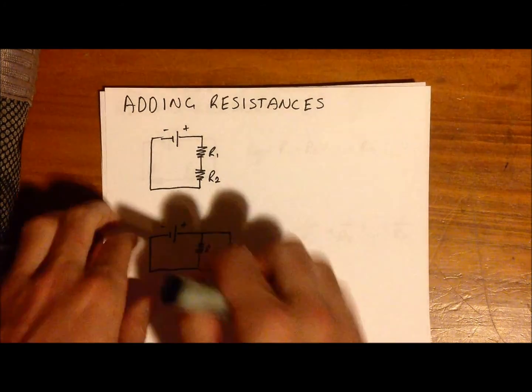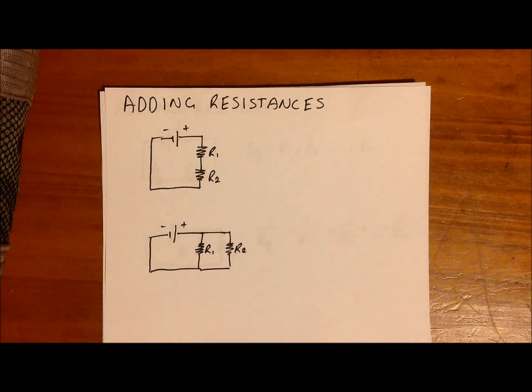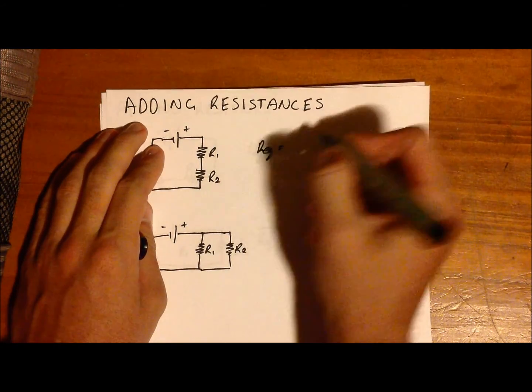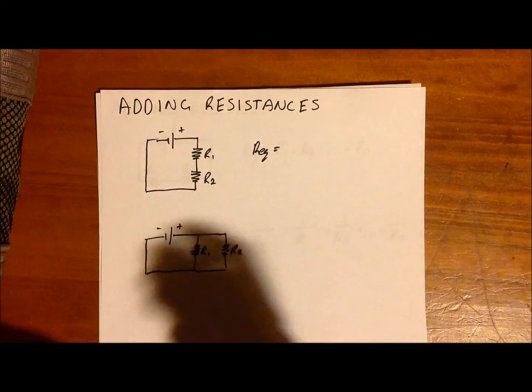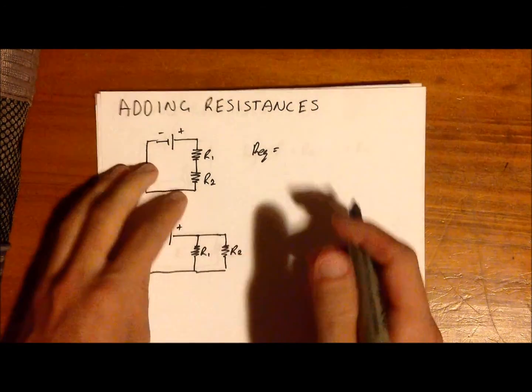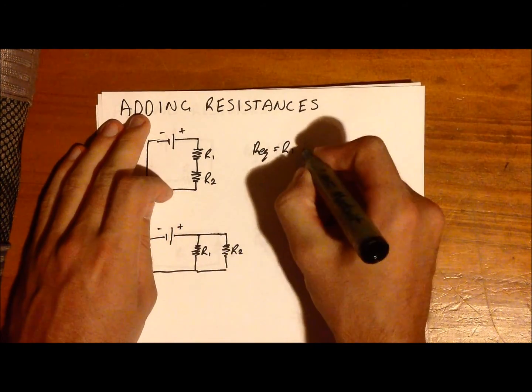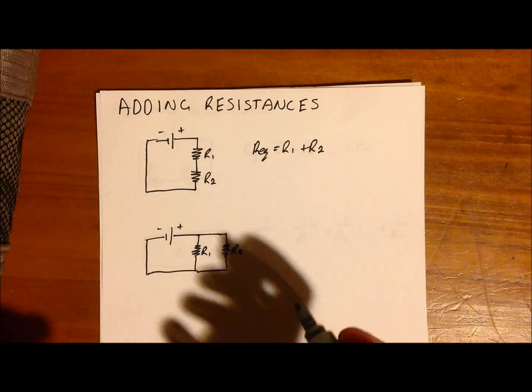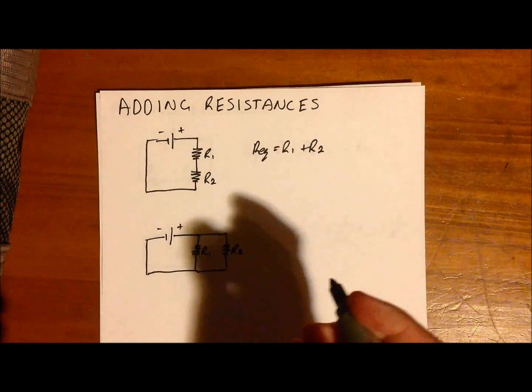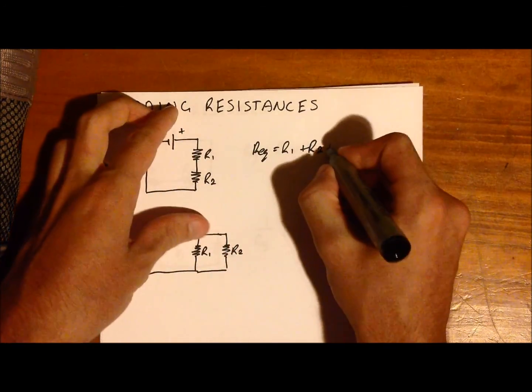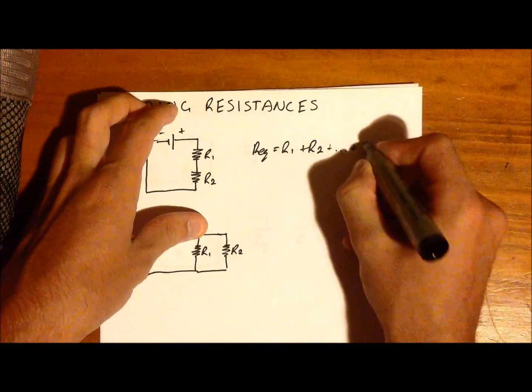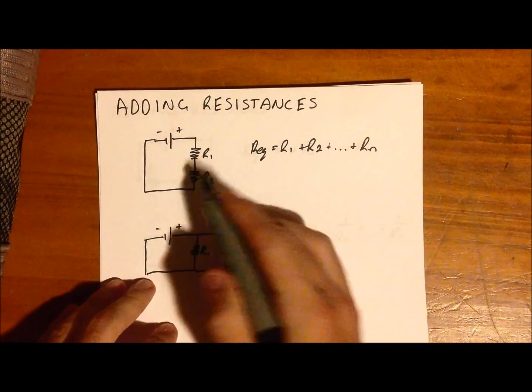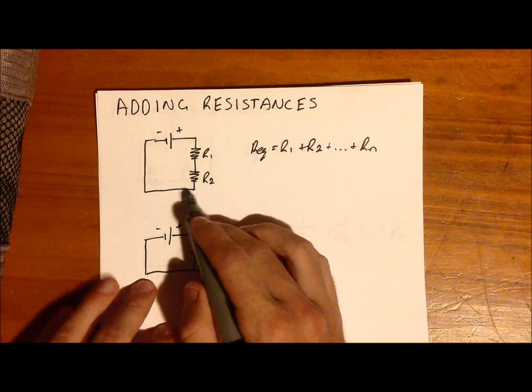So for the series circuit, the equation that we use to add the resistances is the equivalent resistance given by Req is equal to just the sum of all the resistors in the circuit. So in this case, it's R1 plus R2. But this equation can also accommodate for an infinite amount of resistors, so we can add Rn. This basically means an infinite amount of resistors can be in this circuit, and we can still find an equivalent resistance for it.